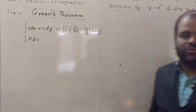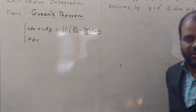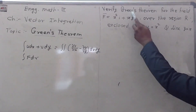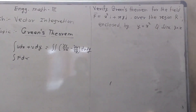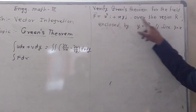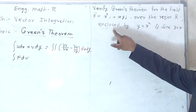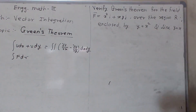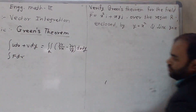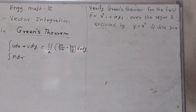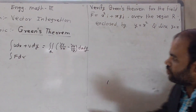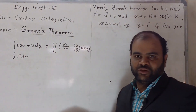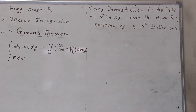We need to take one numerical on the basis of Green's Theorem. The problem is: verify Green's Theorem for the field F-bar over the region R enclosed by y = x² and the line y = x. Verify means we have to find out the value of LHS and RHS both, and both will be the same — then we can say it is verified.